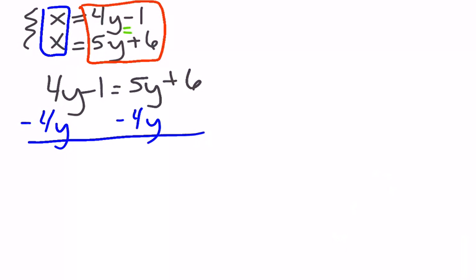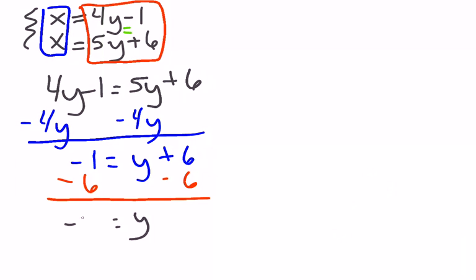You can move the 5y if you don't mind negatives. Nobody cares. Negative 1 equals y plus 6. And my last step is going to be minus 6 on both sides. So no matter what you move, the 5y or the 4y, we should all end up with y being negative 7.